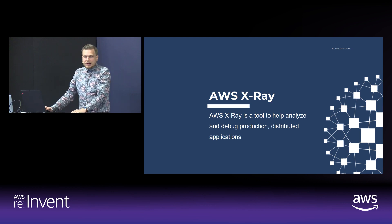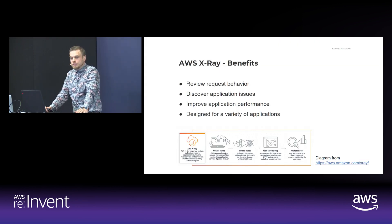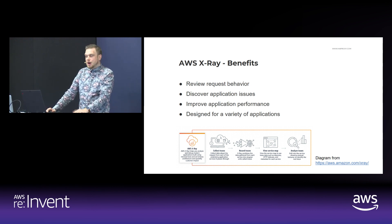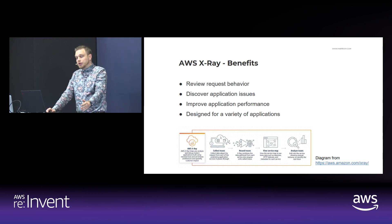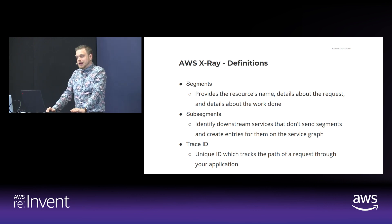AWS X-Ray is a tool to help analyze and debug production distributed applications. Some of its benefits are: it allows you to review request behavior and traces users' requests as they travel through your entire application. With AWS X-Ray you can gather insights into how your application is performing and discover root causes. It also helps you identify performance bottlenecks to improve the overall performance of your application, and it works for both simple and complex applications.